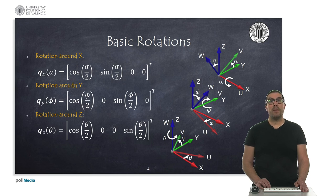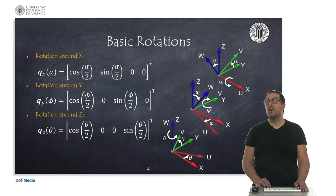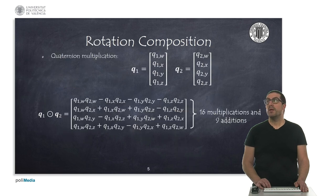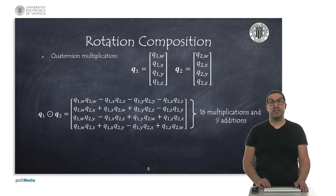We can represent these rotations using precisely the angle-axis vector formula previously shown. With these basic rotations, we can perform rotation compositions and obtain any 3D orientation. The quaternion multiplication is equivalent to the rotation of one reference system with respect to another, and this is the basis of rotation composition.